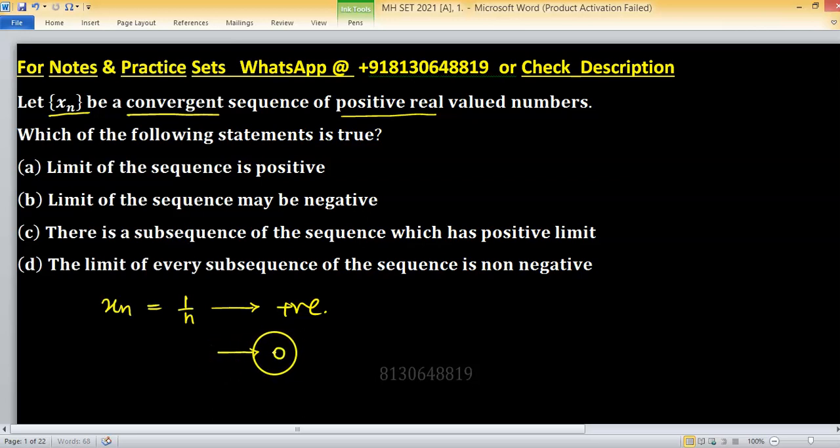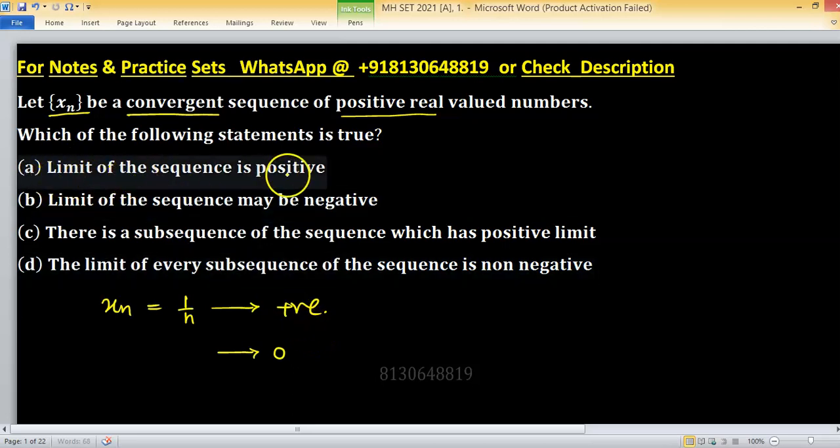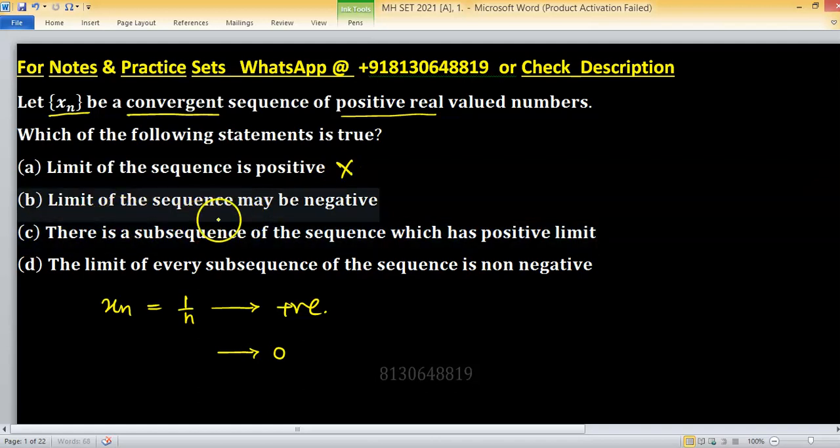The limit of this sequence is zero - positive term series but limit is zero. Option A says limit of the sequence is positive, it is wrong. Option B, limit of the sequence may be negative, is again wrong.